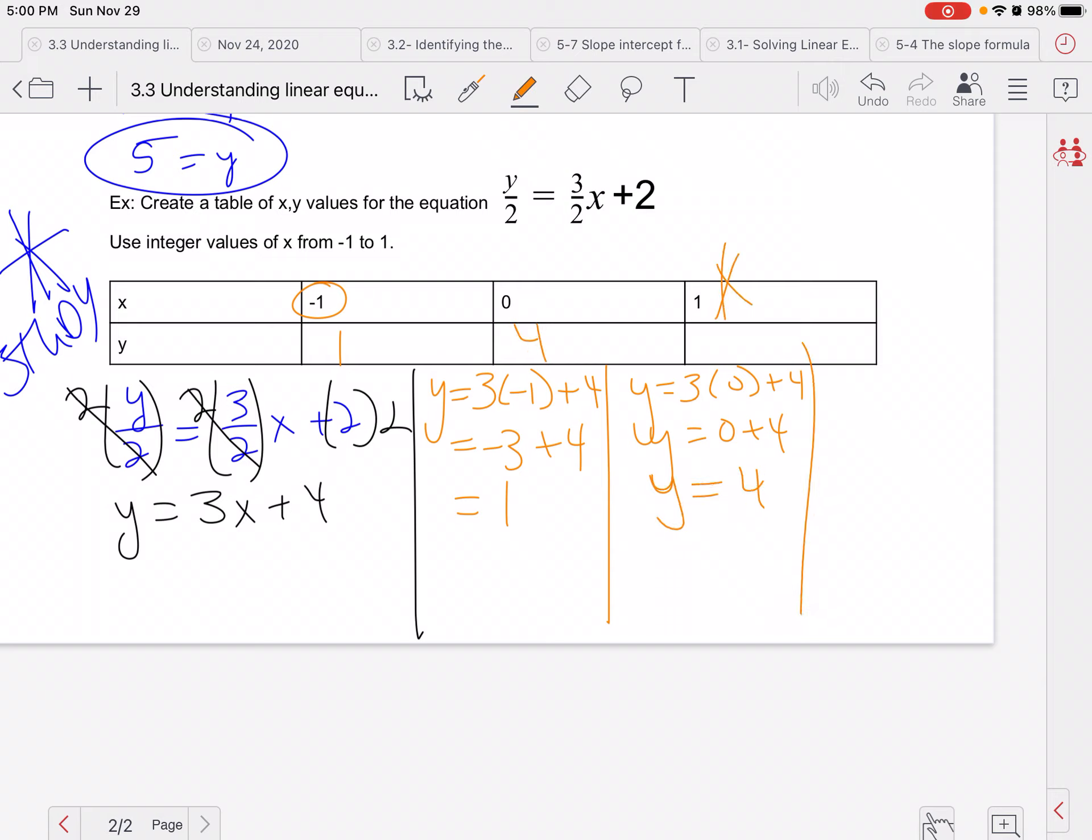Why don't you try filling in this one? So y equals 3 times 1 plus 4. So y equals 3 plus 4. And what is 3 plus 4? 7. So again, when you have to fill in a table of values, negative 1, 0, 1, you're going to plug in x is negative 1, x is 0, and x is 1. So three separate times starting the problem over, and then fill in the table.